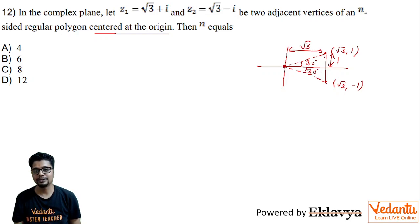So that means when these two adjacent vertices of regular polygon are joined to the center of the regular polygon, the angle that this side subtends is 30 degrees.